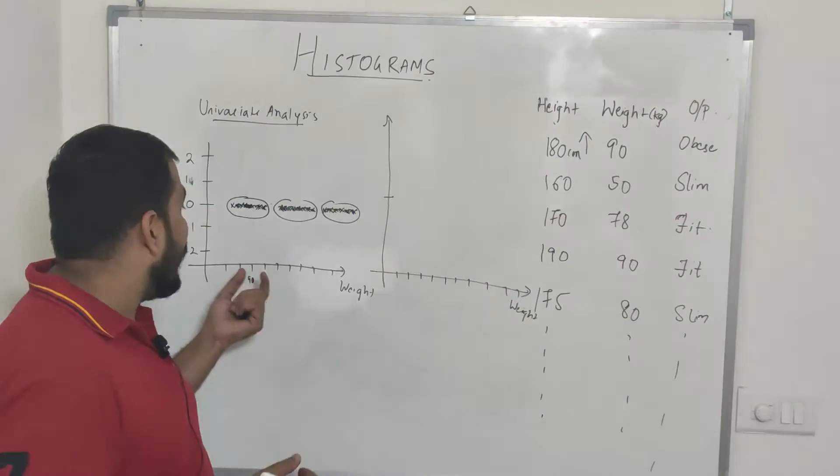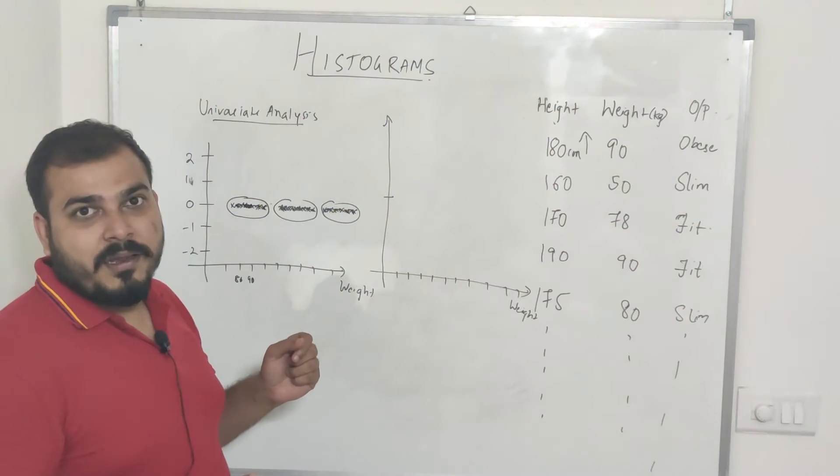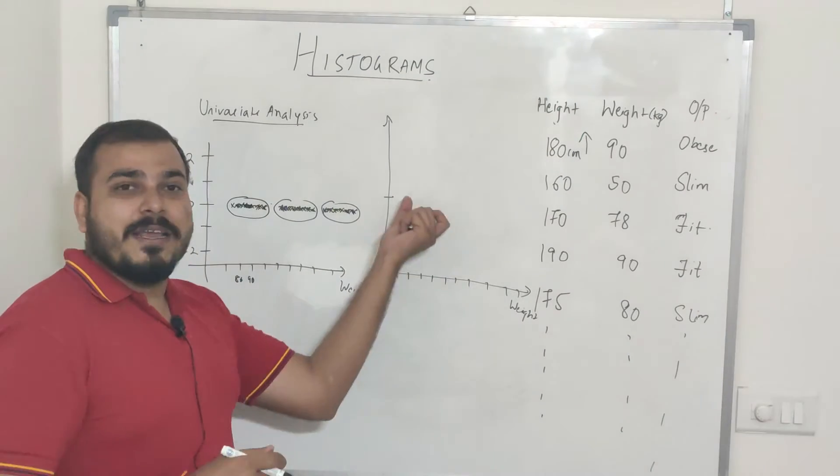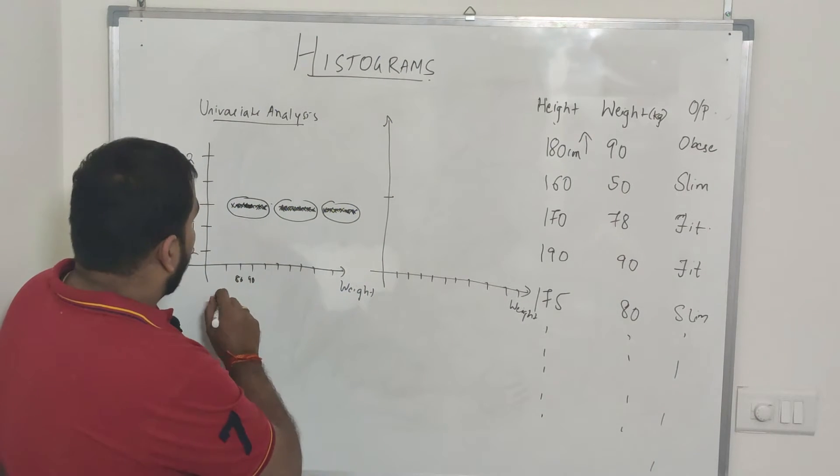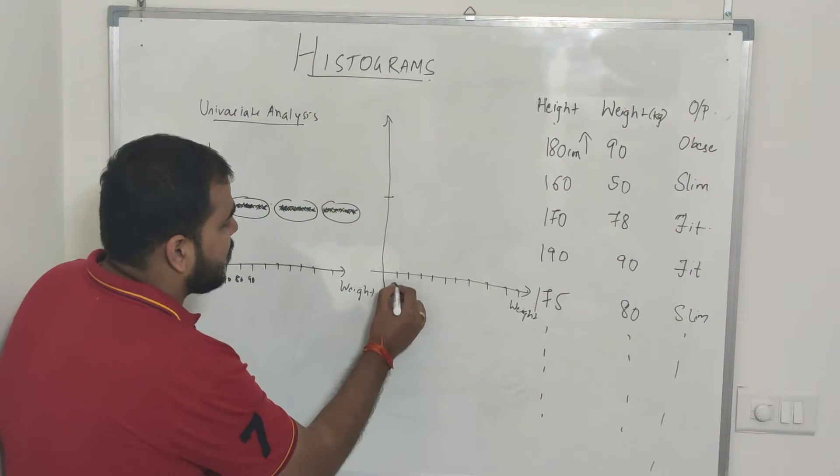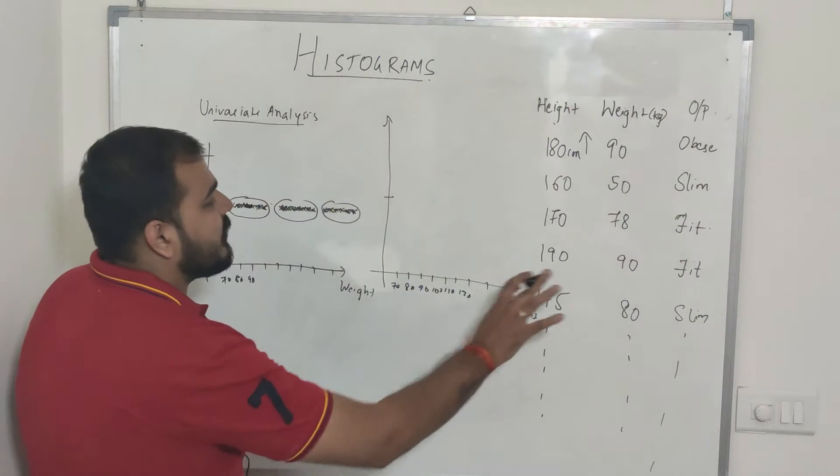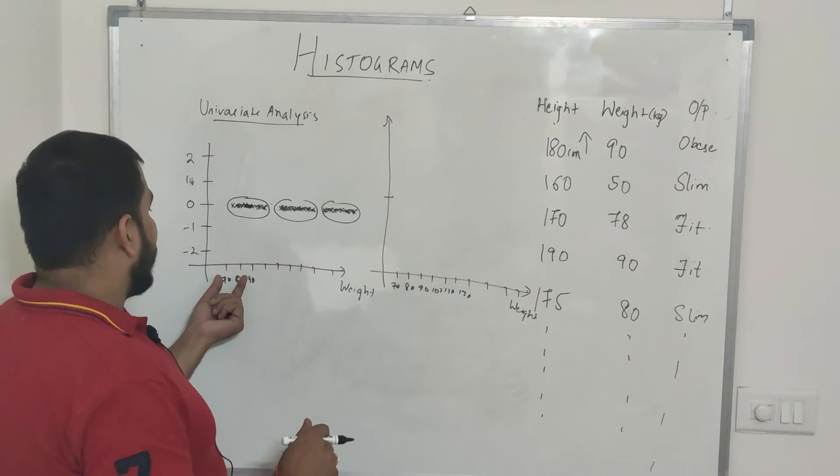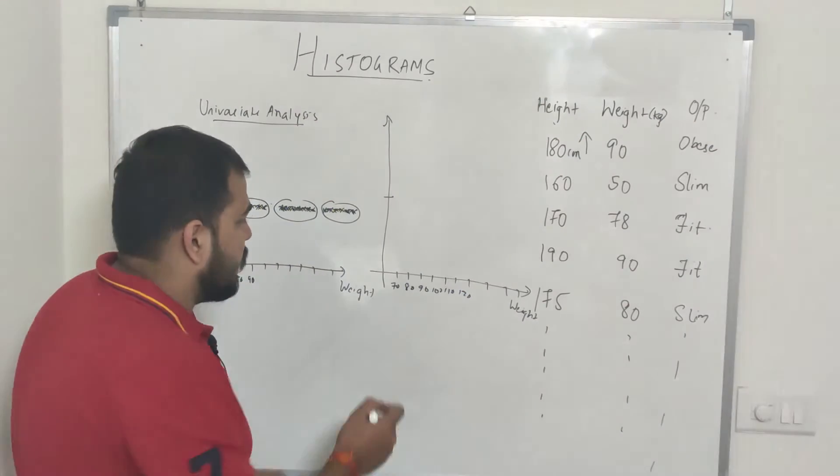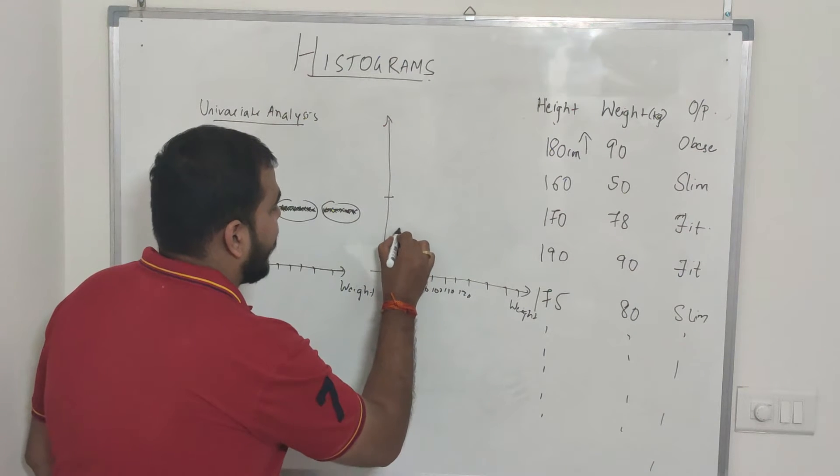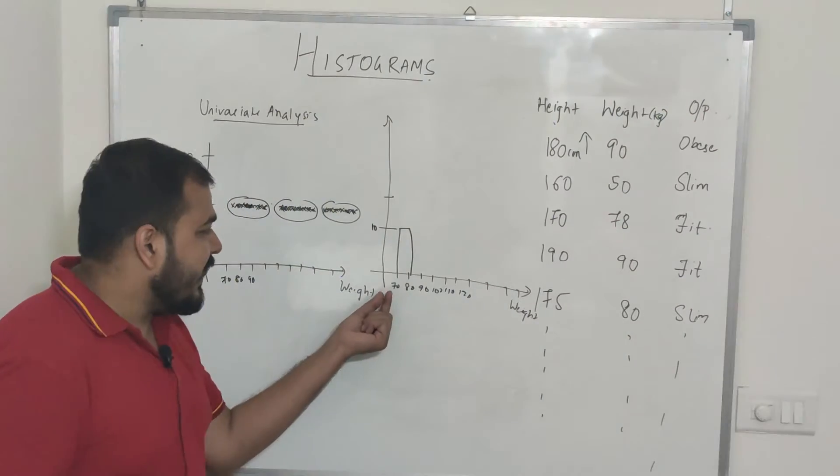Histograms will help us to find out that within this particular range how many number of points are there, and based on that a bar graph will basically be created. Suppose between 70 to 80, consider this is my 70, 80, 90, 100, 110, 120 and like this all the values are there. Consider that within 70 to 80 there are around 10 number of points, so like this a plot will get created with the help of histograms.